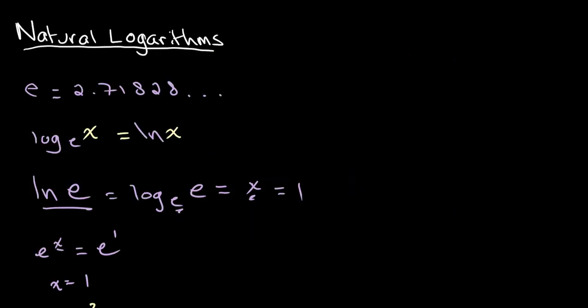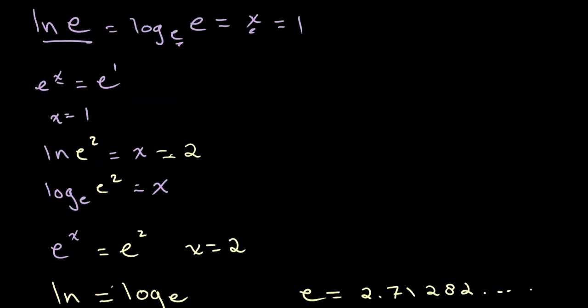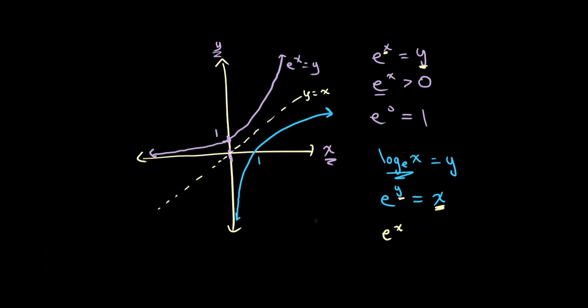So that's it. All you have to know is that ln of x is the same thing as log base E of x, and this is what the graphs of ln of x and e to the power of x look like.